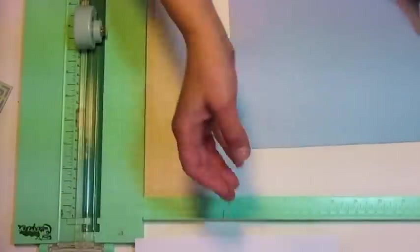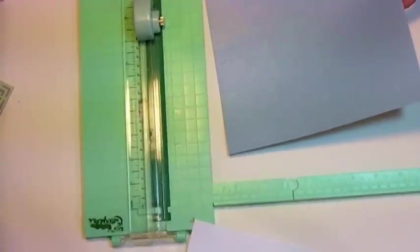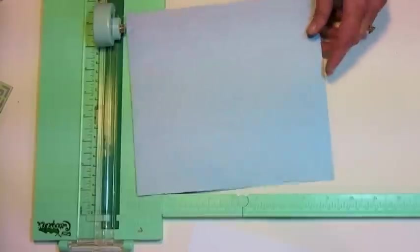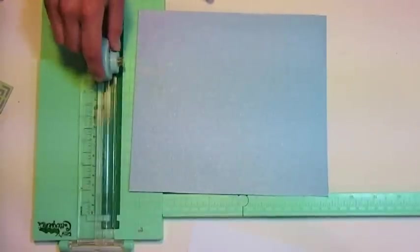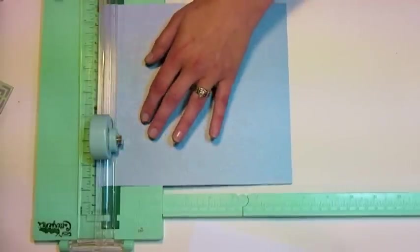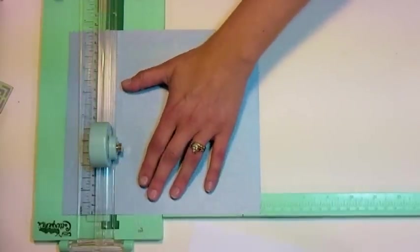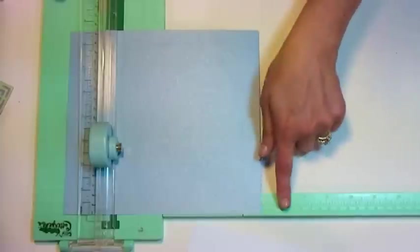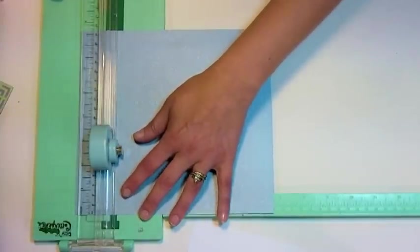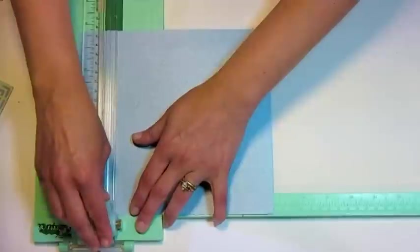So the first thing you want to do is cut your paper, and I recommend using one of these cutters. This is the Cutterpede from EK Success. You want something that you can stop and start your cut within the middle of the sheet, and I'm cutting this paper to six and three quarters by five and a half.